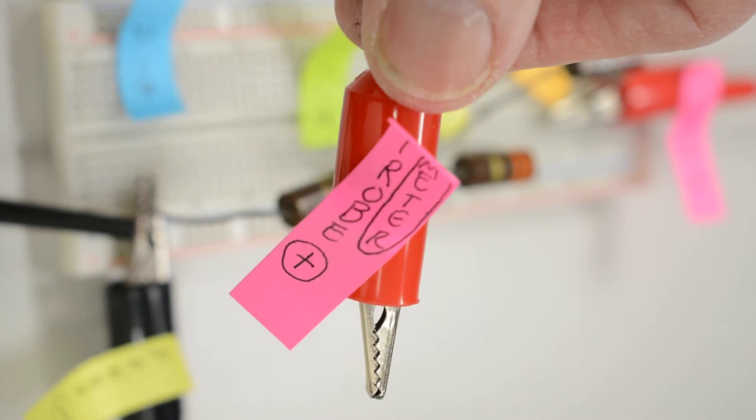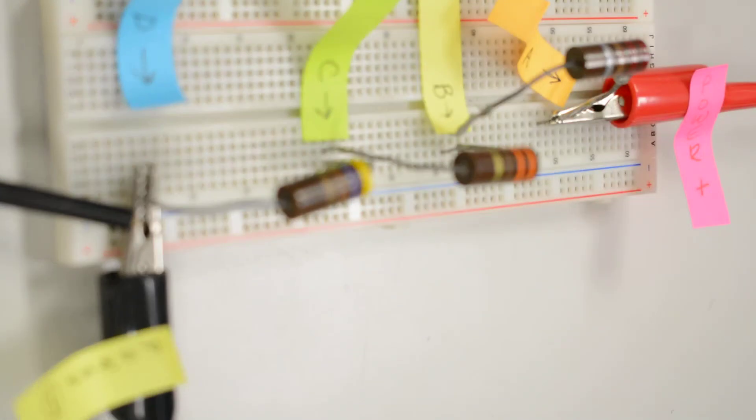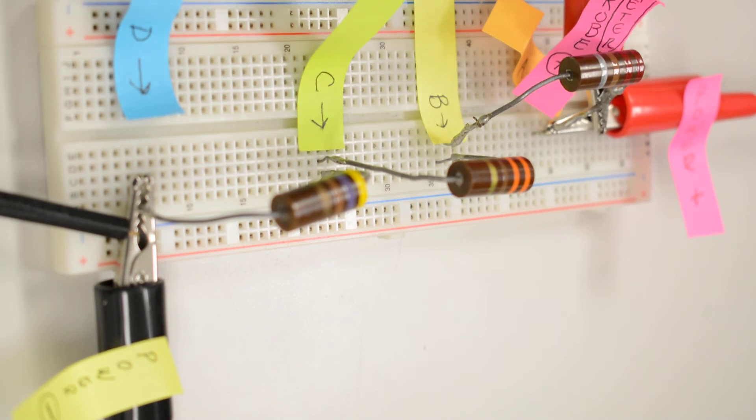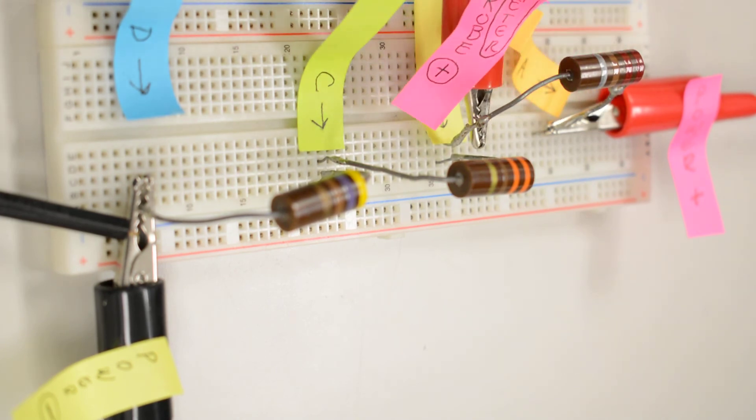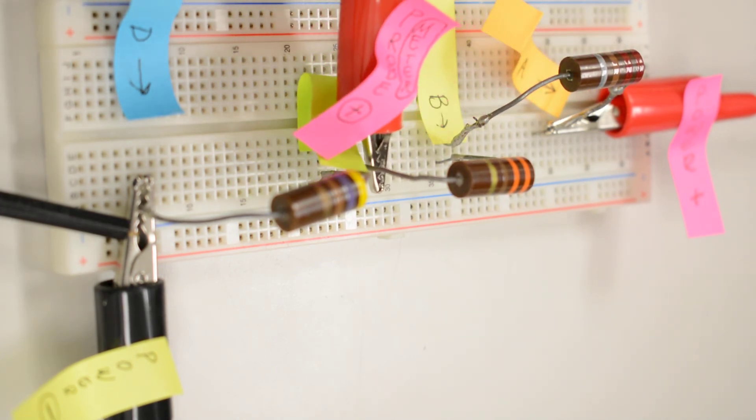So that's my meter probe there. So when I'm taking measurements, I'm going to measure at point A, and then point B, point C, and then ground.